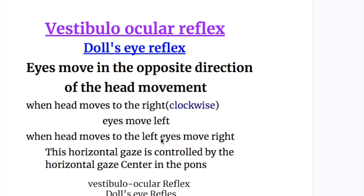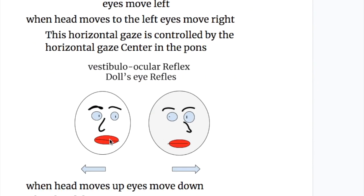So what is the vestibulo-ocular reflex? It is also known as the doll's eye reflex. Eyes move in the opposite direction to the head movement. When the head moves to the right clockwise, eyes move to the left. And when the head moves to the left, eyes move to the right. This horizontal gaze is controlled by the horizontal gaze center in the pons.